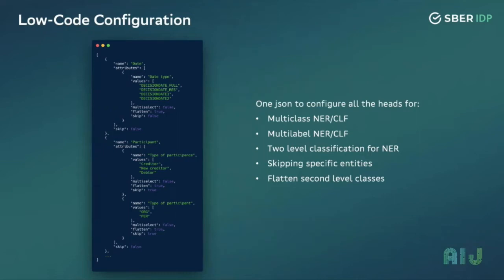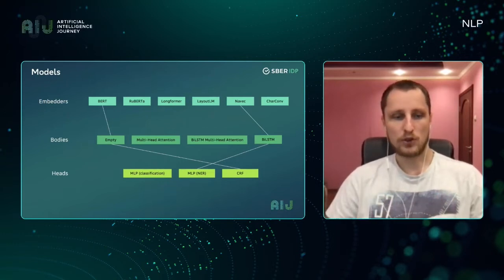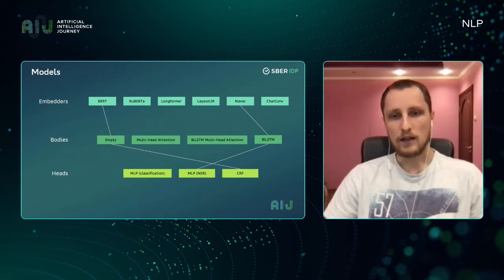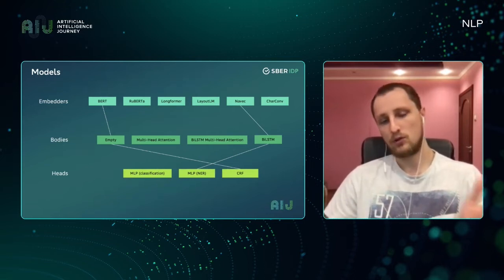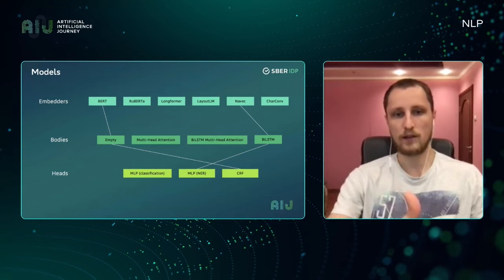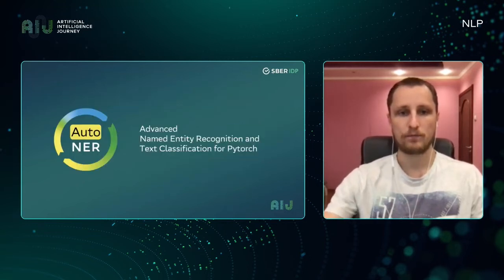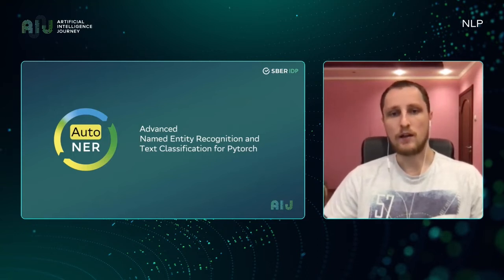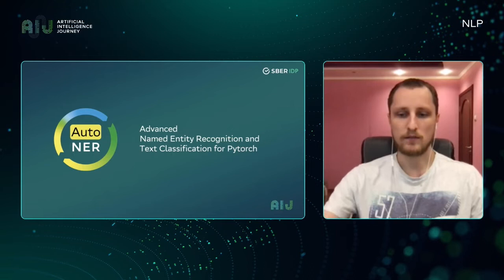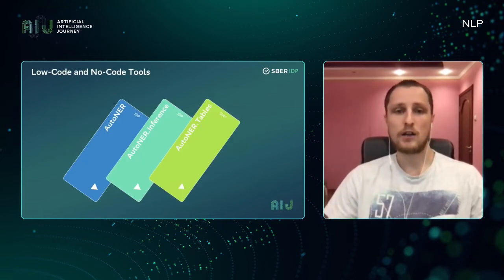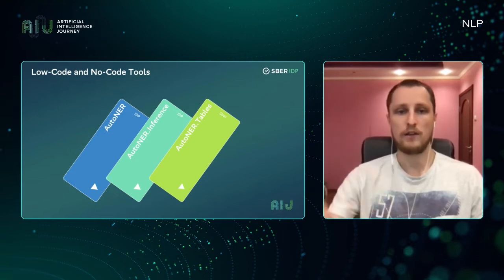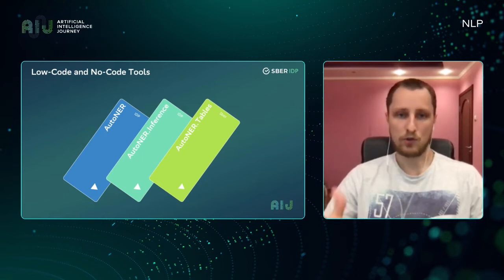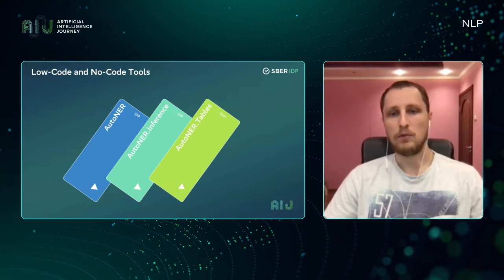The JSON configuration supports multi-class and multi-label neural classification, two-level classification of entities, and entities can be skipped or flattened into single-level classification. Models consist of three main parts: bodies and heads. For each part you can select from a set of options and create various combinations — for instance BERT, RoBERTa, or BILSTM. Our framework is called AutoNER. It allows classification of texts and model learning, and for simple entities like dates you do not need additional training — everything works out of the box.